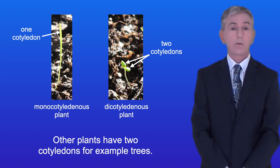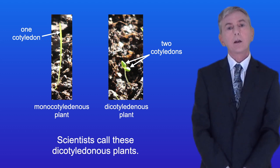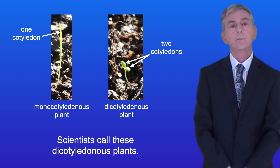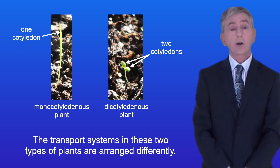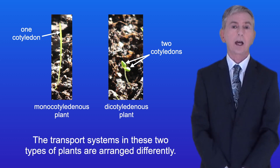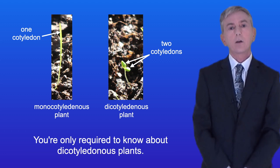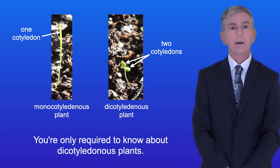Other plants have two cotyledons, for example trees. And scientists call these dicotyledonous plants. Now the transport systems in these two types of plants are arranged differently, and you're only required to know about dicotyledonous plants.